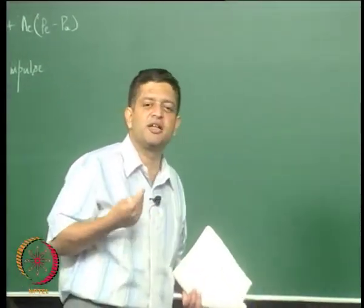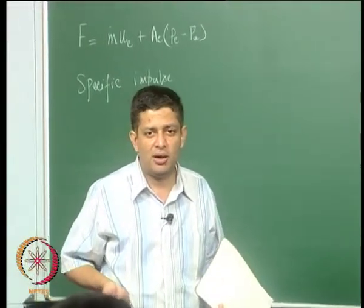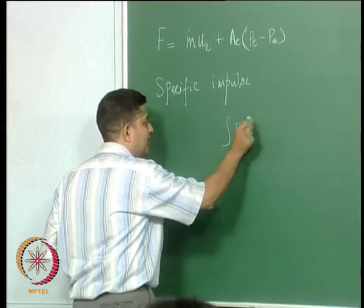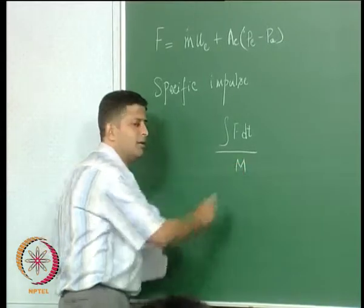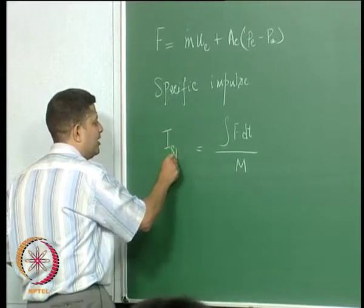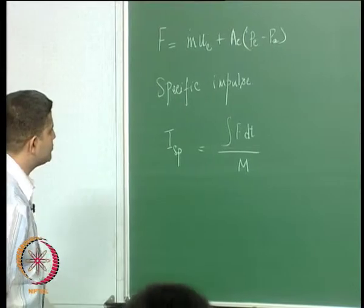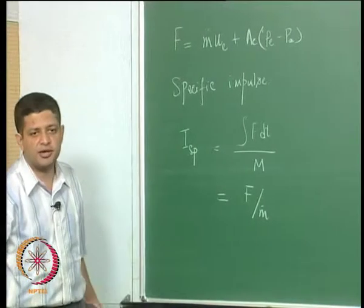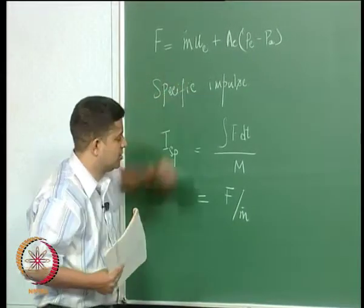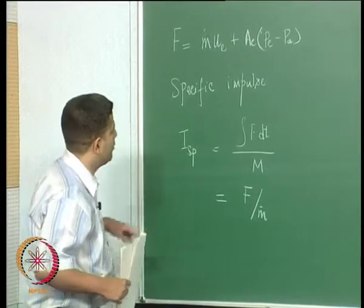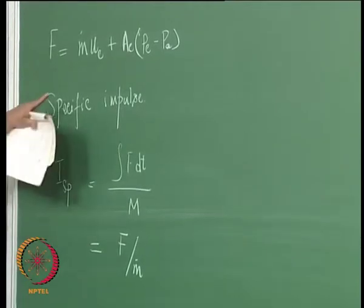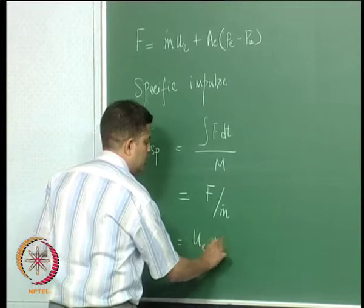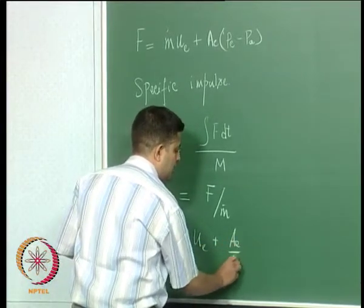Specific impulse, as the name itself suggests, is nothing but impulse per unit mass. Impulse is the integral of F dt per unit mass of the propellant. This is known as specific impulse, denoted by ISP. Working this out, you get ISP as thrust per unit mass flow rate. Taking m_dot, you get ISP equal to ue plus AE by m_dot.